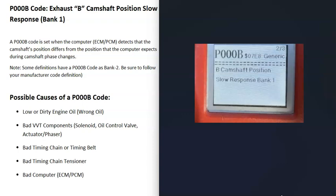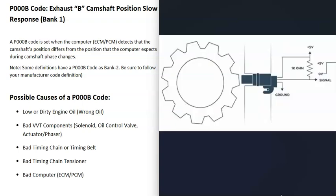What does this mean? Basically, there's a camshaft position sensor that's tracking the camshaft as it spins, and it's reporting this information back to the computer. When you get a P000B code, this sensor is reporting that there's some kind of issue going on with the timing, so it's going to require troubleshooting to know why.